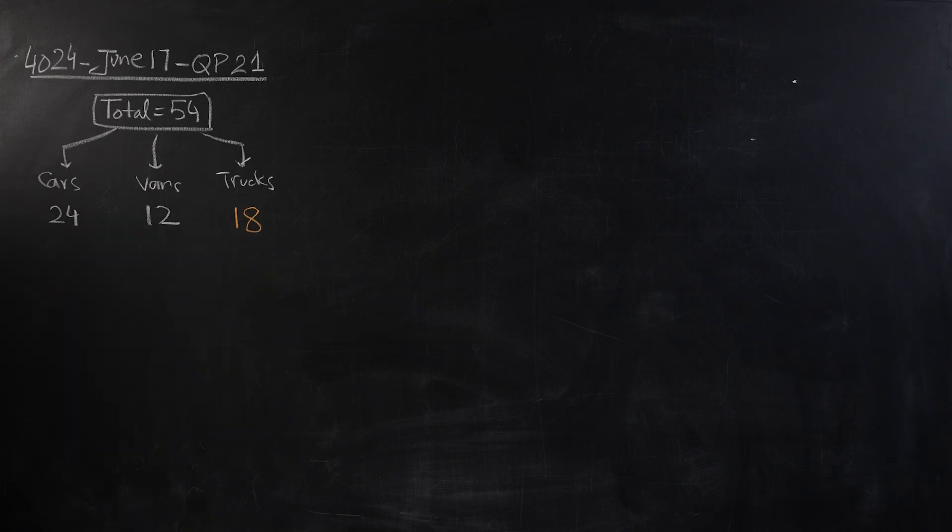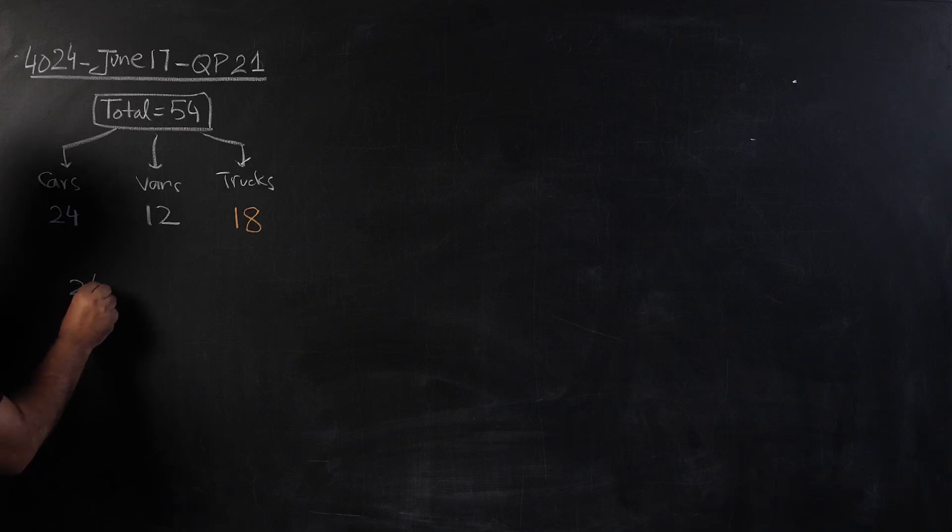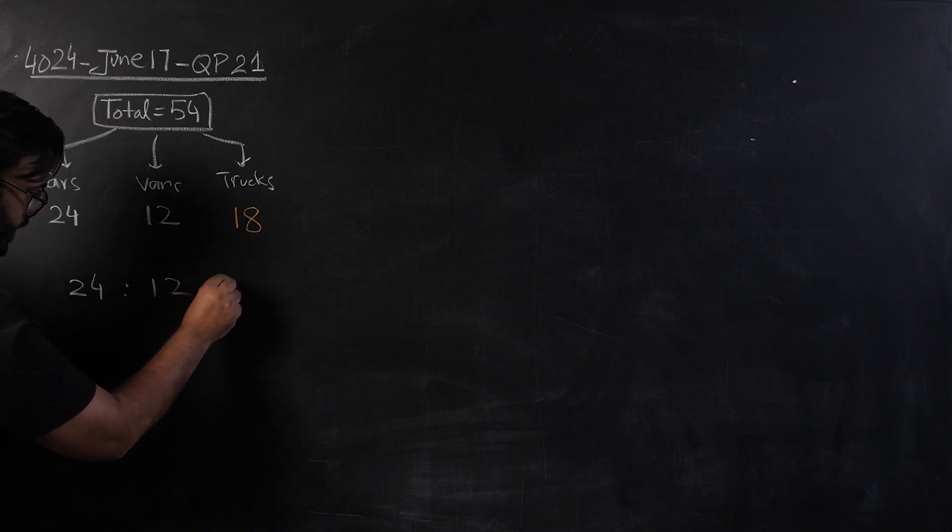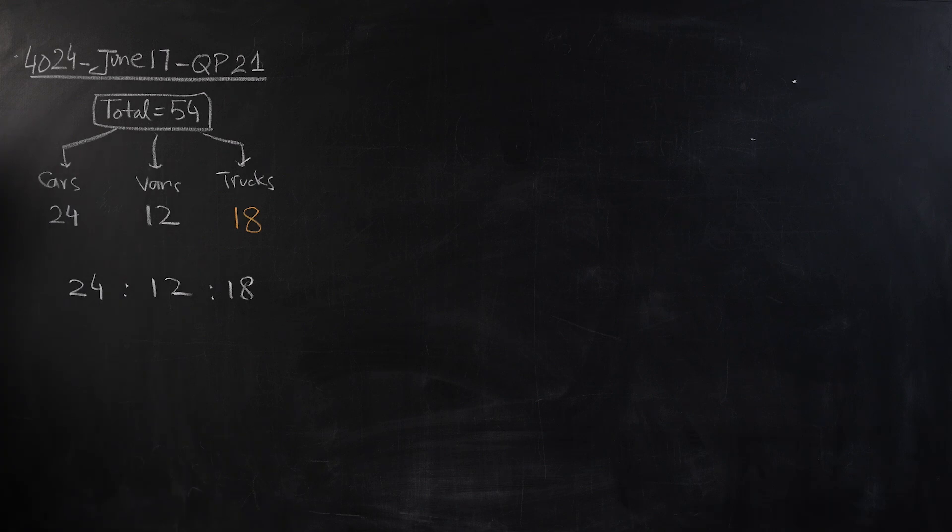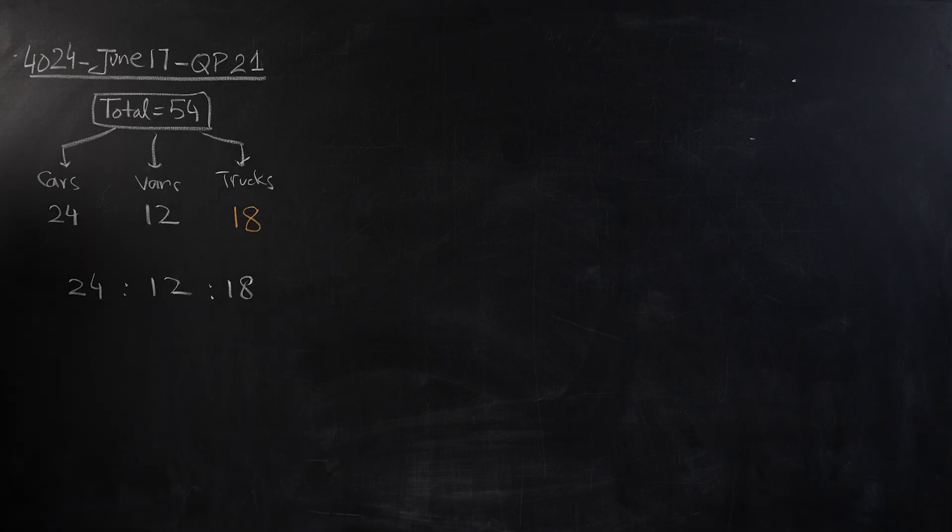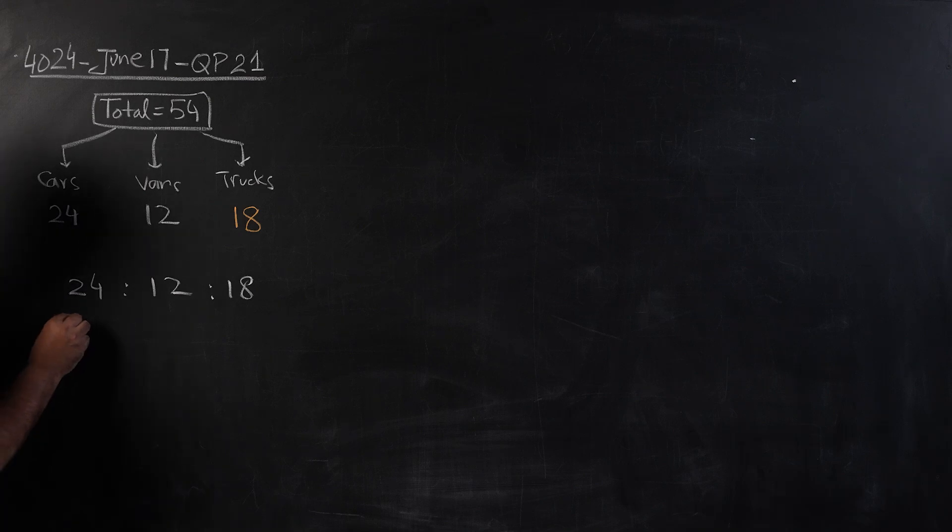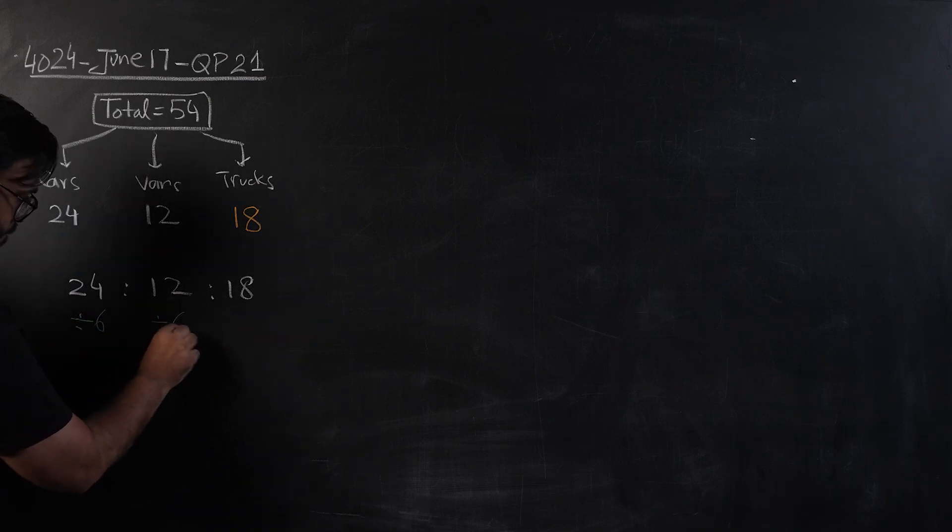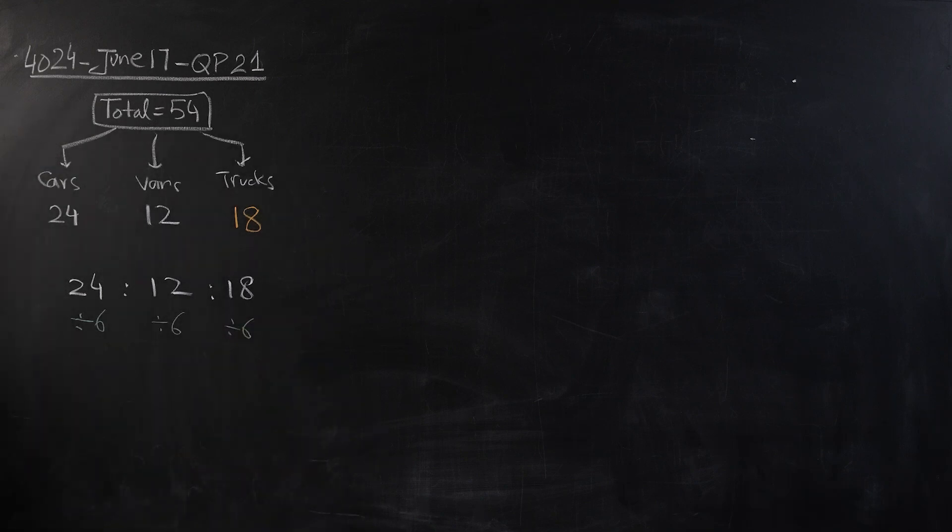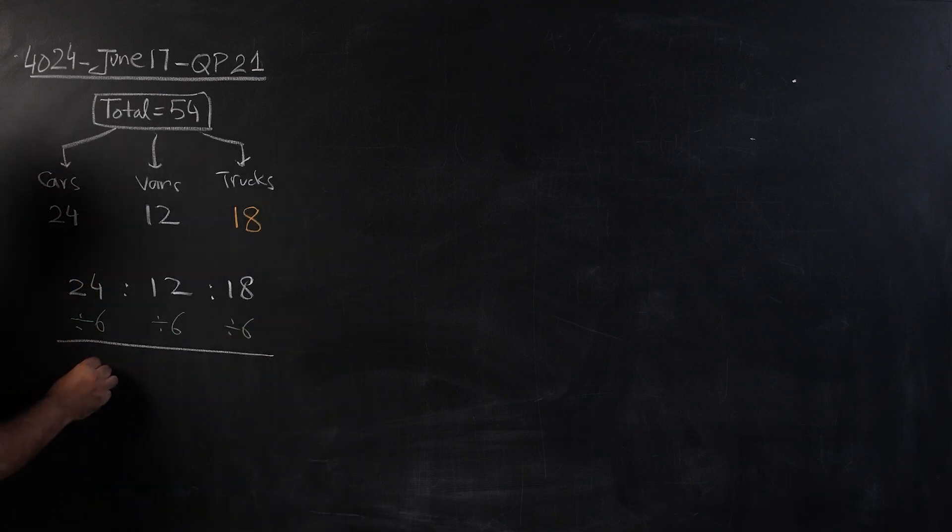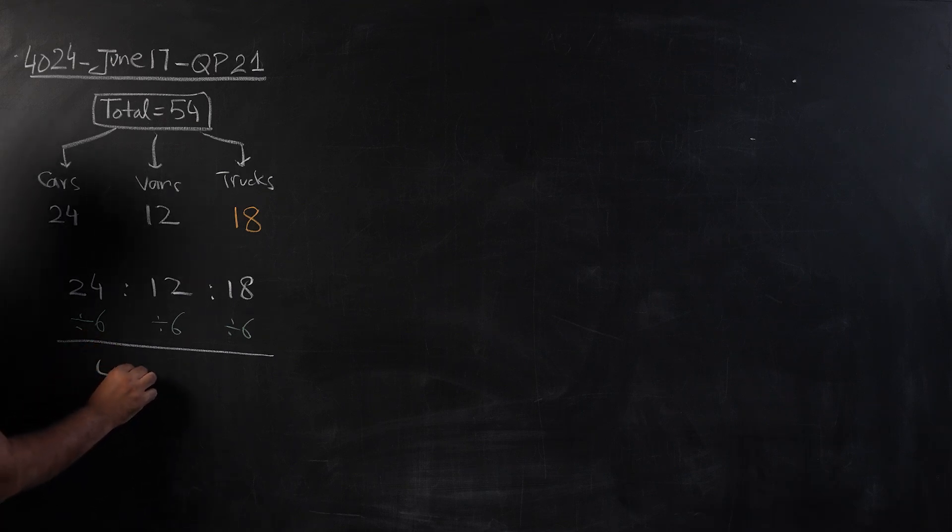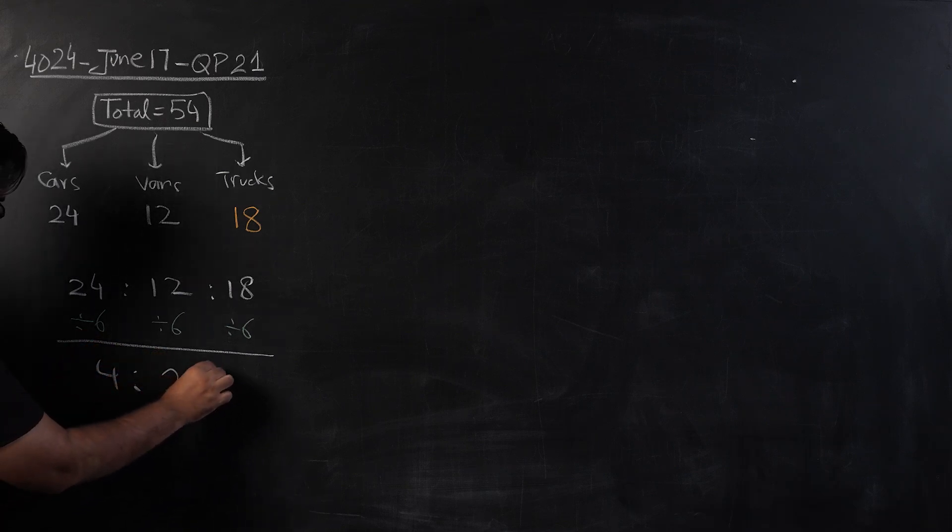The next thing they've asked us is to simplify this as a ratio. If I write 24 ratio 12 ratio 18, to simplify a ratio you have to divide by a number which is divisible on all three of them. We can see that all of them are divisible with 6, so I'm going to divide all of them with 6.